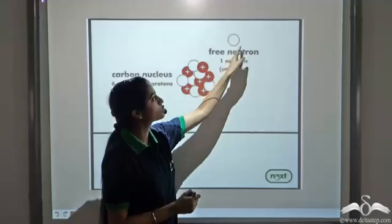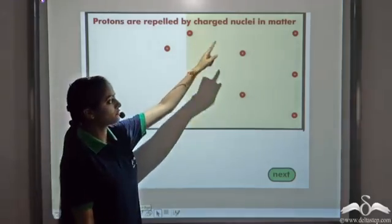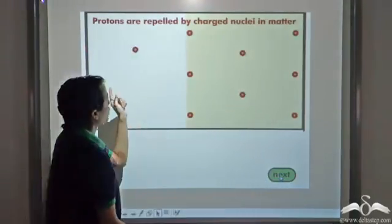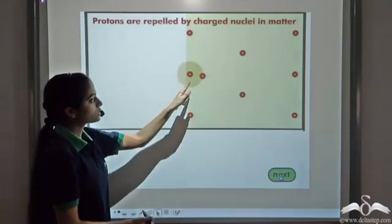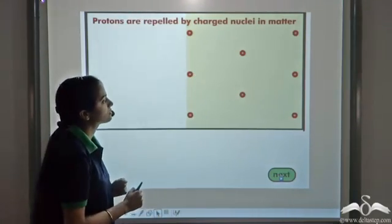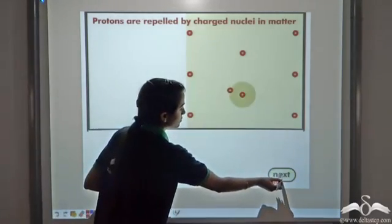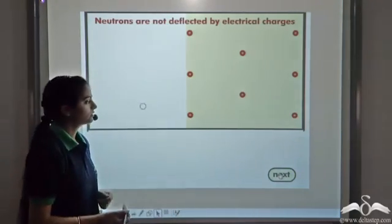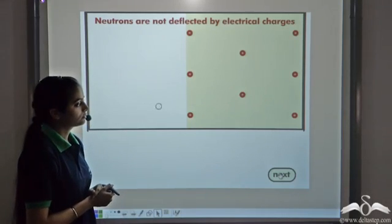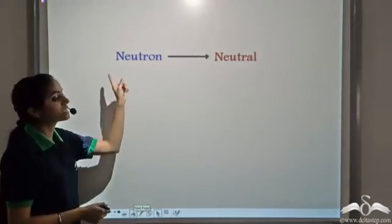Now he wanted to check if this neutron was neutral in nature or not. So he took a field of positive particles — a field containing all positive particles. If a positive particle is passed through this field, like charges repel, so a proton passed through this field is repelled by these positive charges. Then he passed the neutron — the particle he had obtained from the reaction — through this field. He observed that the neutron was neither attracted nor repelled by these positive charges.